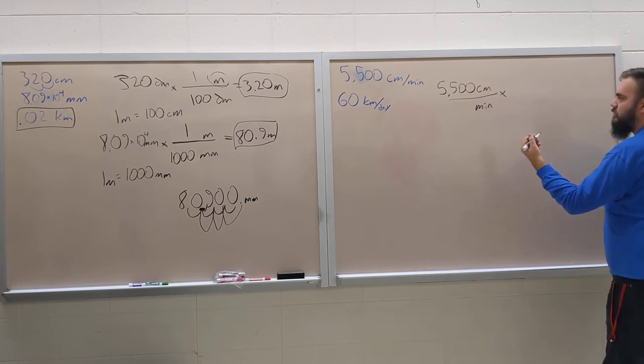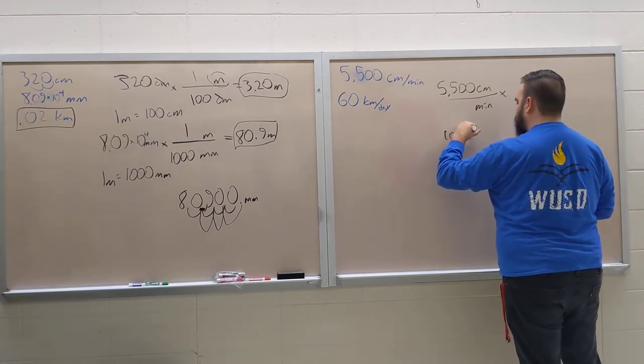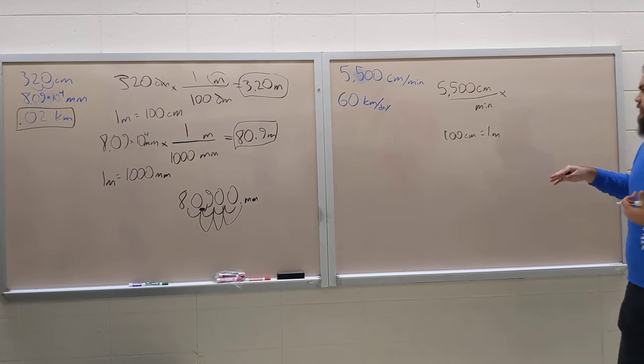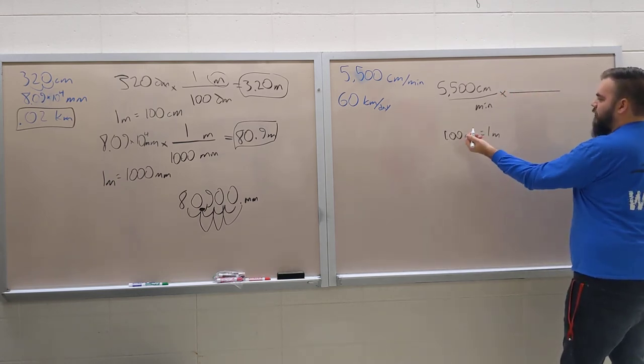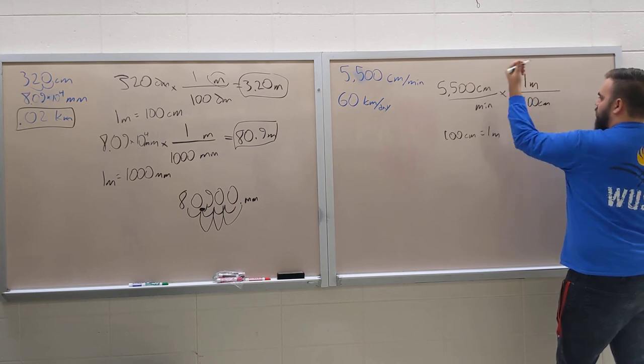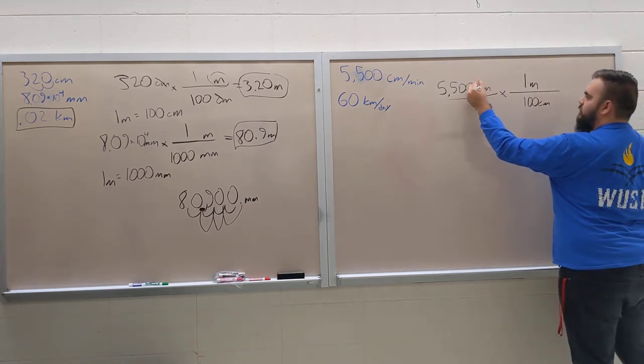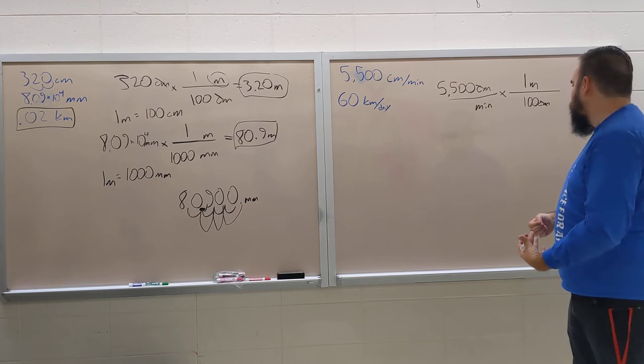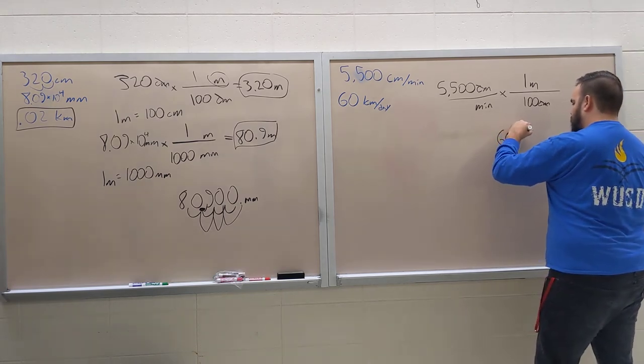First off, we know that there are 100 centimeters in one meter. So then to cancel out the centimeters, we're going to put 100 centimeters down here and then the one meter up here. If we cancel the units, we now have meters per minute. But we don't want meters per minute, we want meters per second, so we're going to have to convert this minute into a second. We also know that there are 60 seconds in one minute.